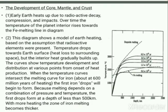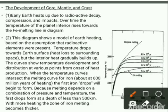Regarding the development of the core, mantle, and crust: early Earth heats up due to radioactive decay, compression, and impacts. Over time, the temperature of the planet's interior rises towards the Fe melting line in the diagram.